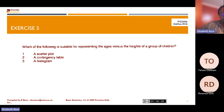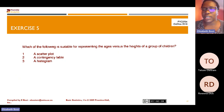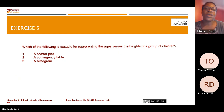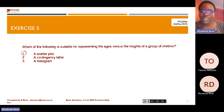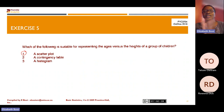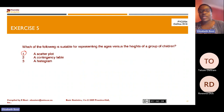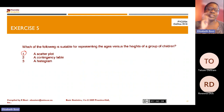Let's look at another example: which of the following is suitable for representing age versus height of a group of children — a scatterplot, a contingency table, or a histogram? The answer is one — a scatterplot. A contingency table is used when dealing with a relationship between categorical or nominal values. A histogram is when you are visualizing one numerical value. When you have two numerical values, the plot to use is the scatterplot.